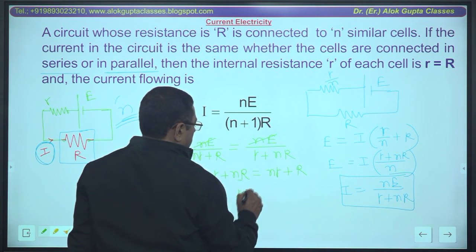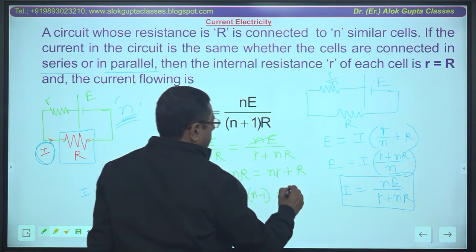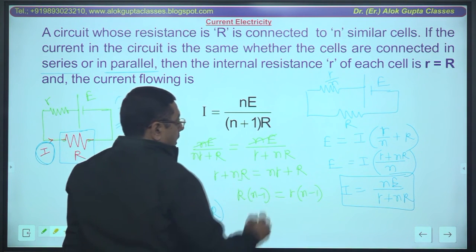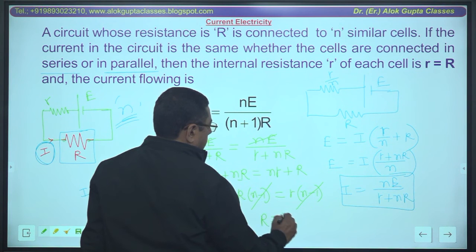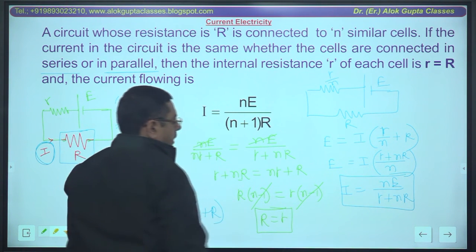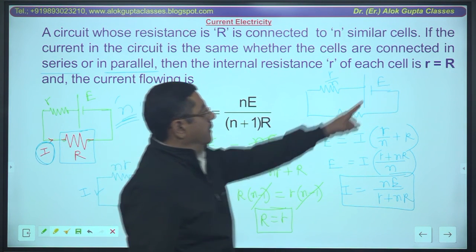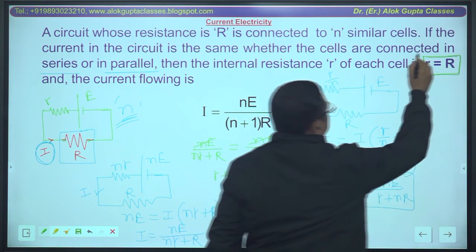Transfer here and take r common: n minus 1 equals R transferred to right hand side with R common, it is again n minus 1. n minus 1 is also common, you can directly cancel. The condition is: total R equals internal resistance of one cell, it is r. R equals r. So this is the condition.